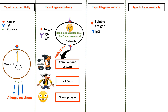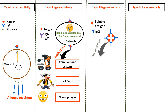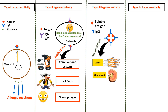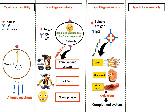In hypersensitivity type 3, the small antigen-antibody complexes float through the blood and accumulate in various tissues such as joints, glomeruli and blood vessels. This accumulation triggers the complement system to attack the host tissues.